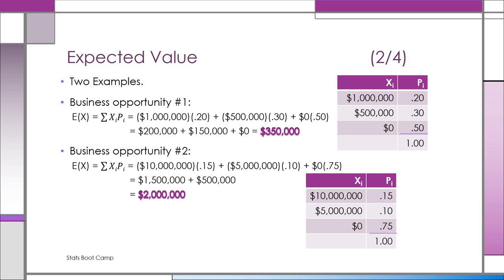Business opportunity two, where there's a 15% chance of making $10 million, a 10% chance of making $5 million, and a 75% chance of making zero, the expected value turns out to be $2 million.